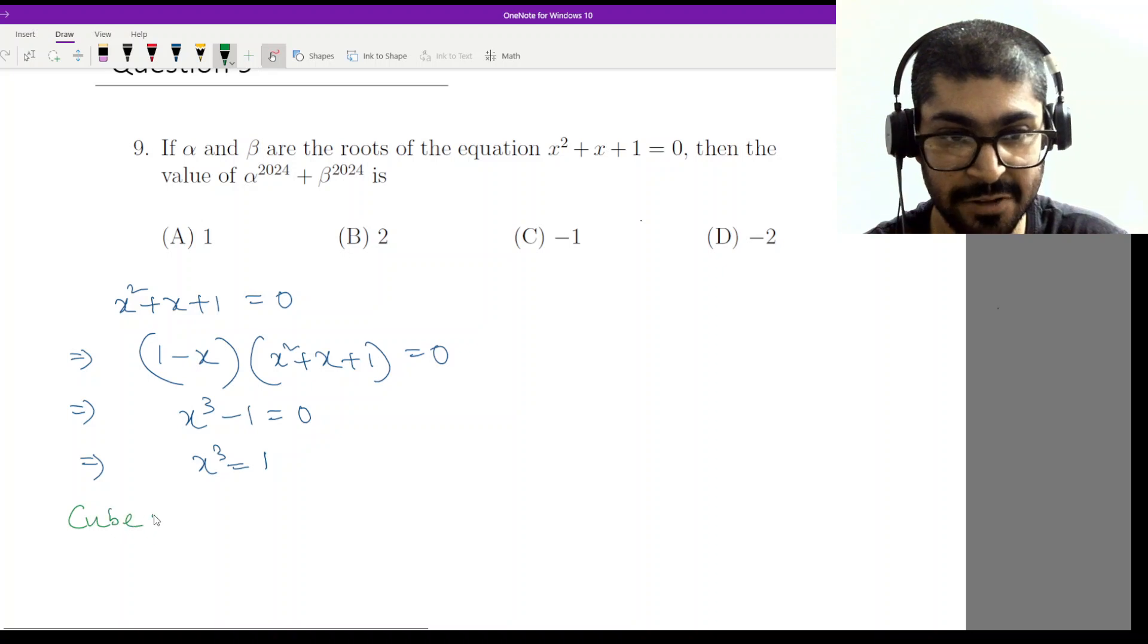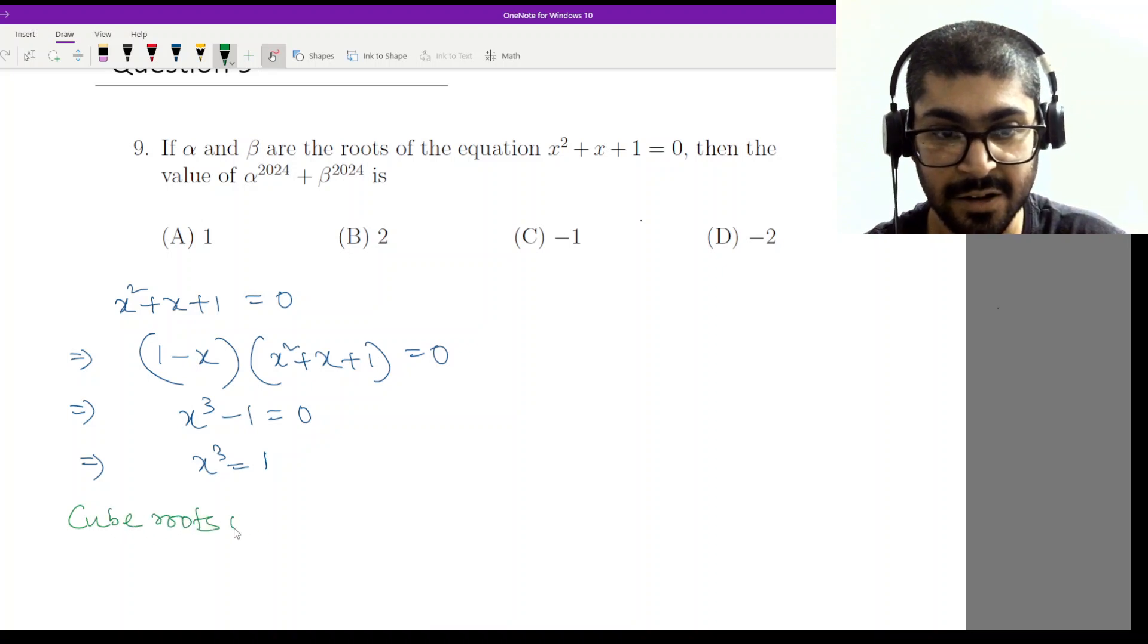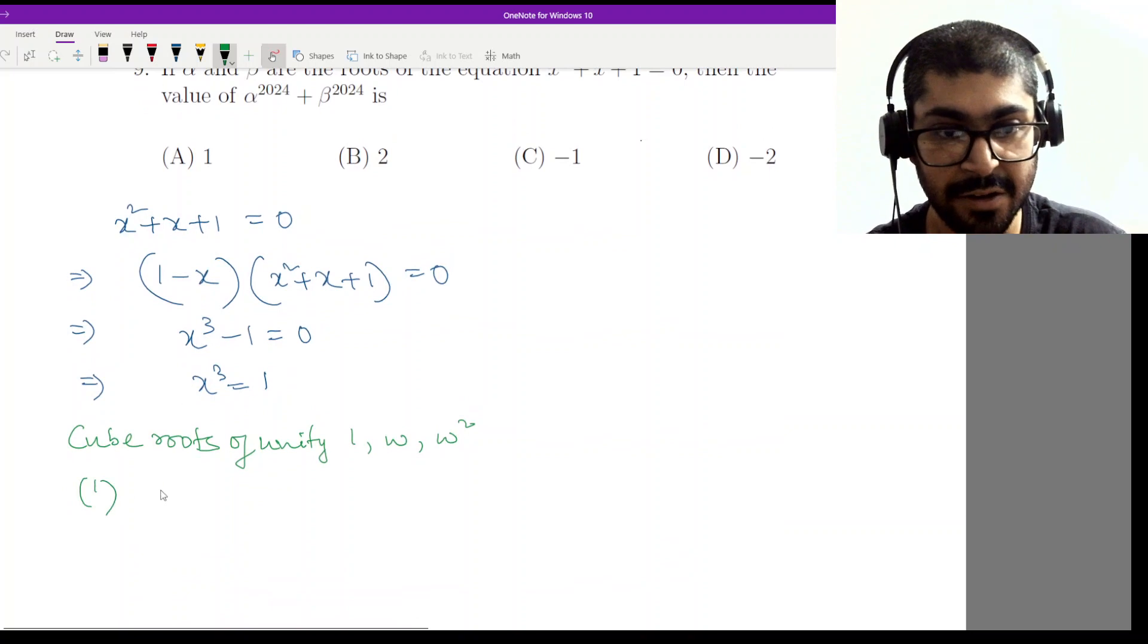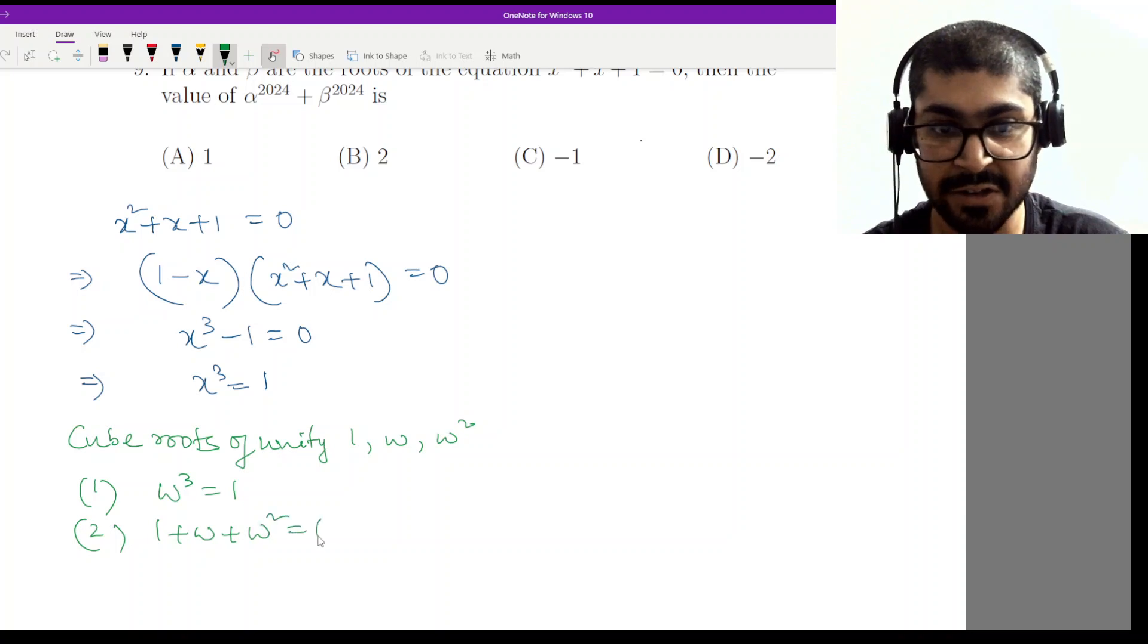So the solutions of this are cube roots of unity. I hope you remember it, cube roots of unity. So these will be 1, omega, and omega square. Now what are the properties of it? Two properties where omega cube was equal to 1 and then I had 1 plus omega plus omega square. This was equal to 0.